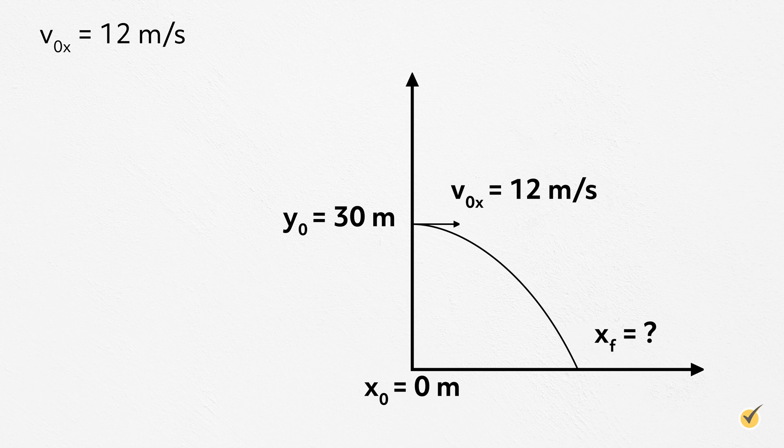We are told that the ball moves along the ground and goes straight off the cliff at 12 meters per second. This means that the initial velocity, v0, is only in the x direction and is 12 meters per second. So we have v0x equals 12 meters per second and v0y equals 0.